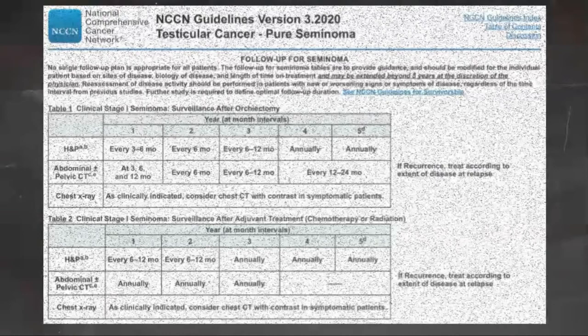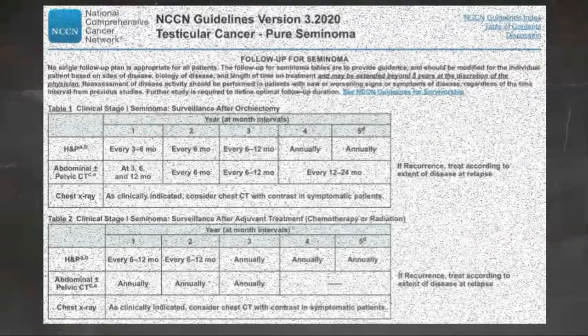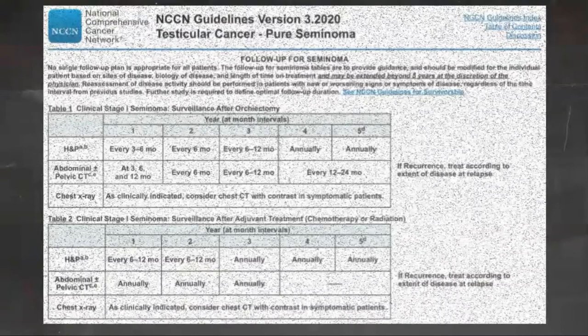The NCCN panel recommends an abdominal pelvic CT scan with or without contrast at 3, 6, and 12 months during the first year, every 6 months for year 2, every 6 to 12 months for year 3, and then every 12 to 24 months for years 4 and 5. CT is not recommended beyond 5 years unless clinically indicated. The MRI protocol should include visualization of all nodes including the retroperitoneal and pelvic nodes and should be performed in centers with experience. The same imaging modality — CT or MRI — should be used throughout surveillance. Routine chest imaging should be reserved for patients with thoracic symptoms.